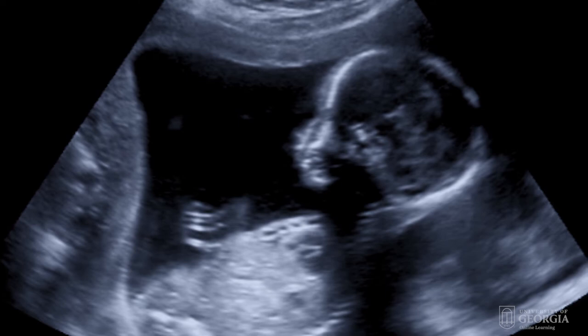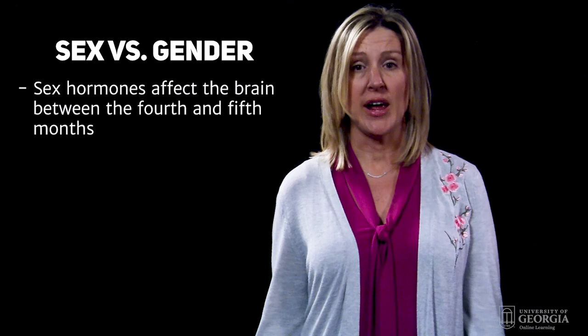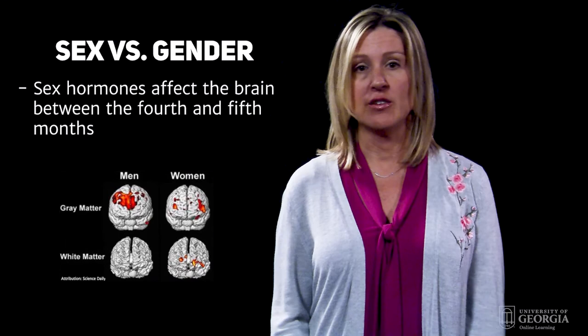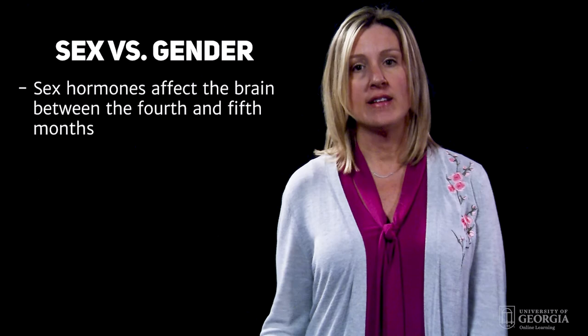We know that there are some differences between the function and structures of the male and female brain, and some of these sex differences appear to be prenatally influenced by chromosomes. For example, there are differences in the utilization of gray matter versus white matter between men and women when engaged in activities. More research is necessary, but a person may have the sex organs of one sex but the brain of the other — they may be transgendered.